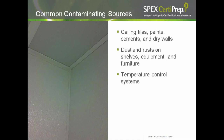Drywalls can give high calcium and lead contamination. Rust on shelves, equipment, and furniture can give you iron contamination. Carbon, iron, and silica can come from your temperature control systems.